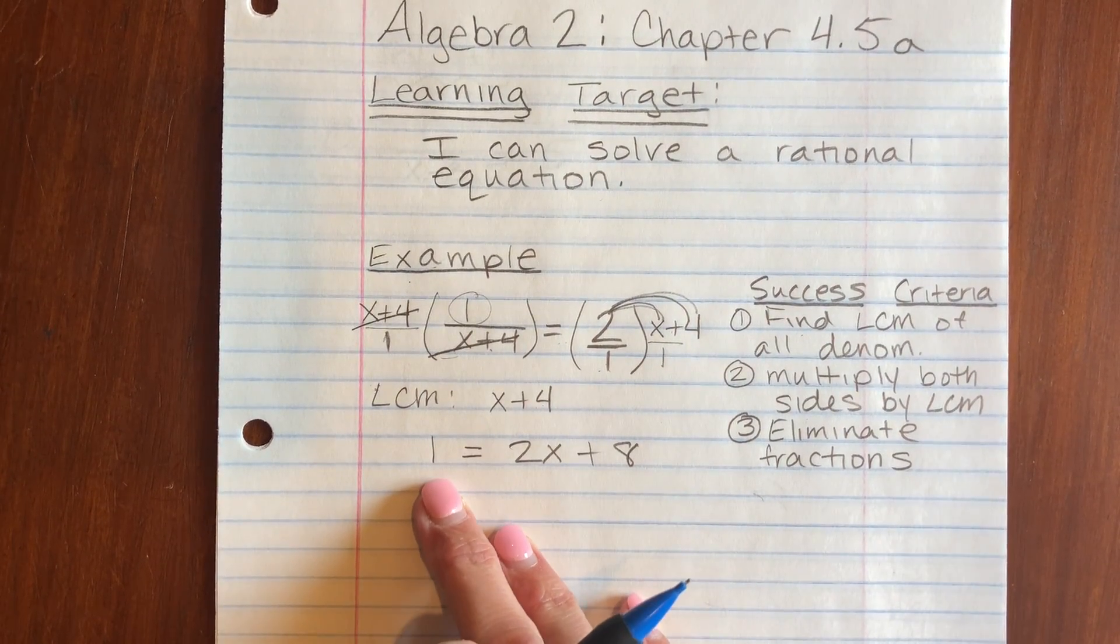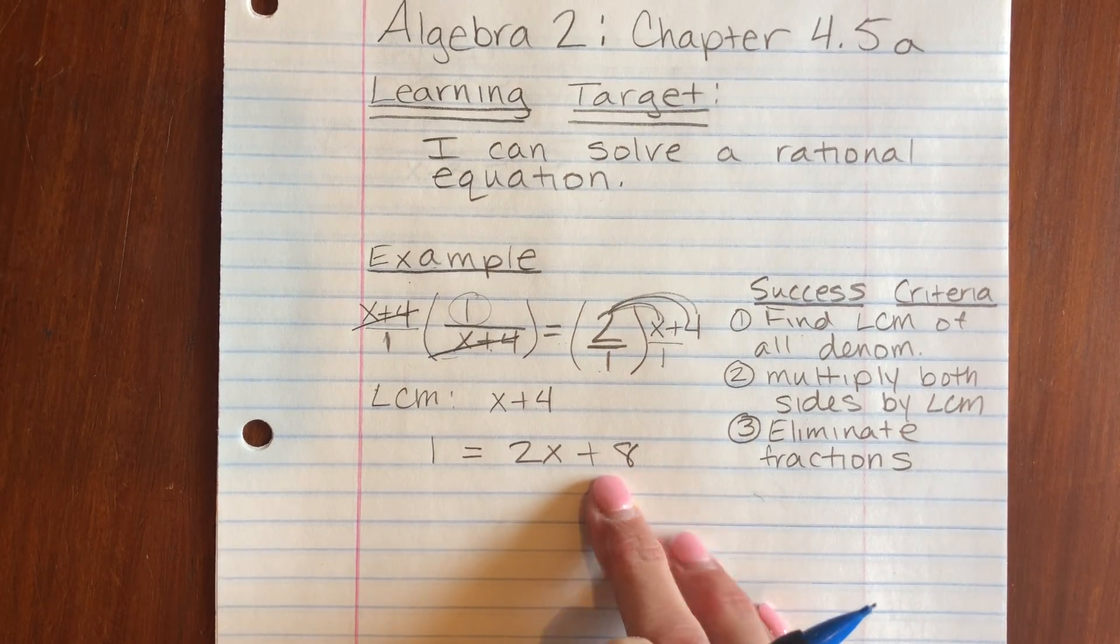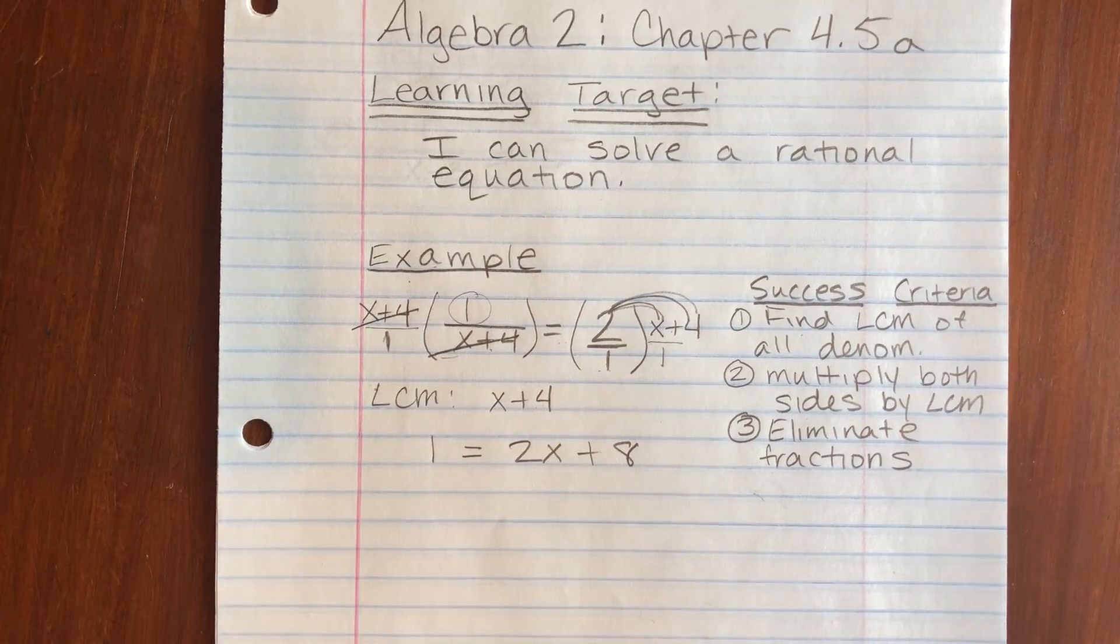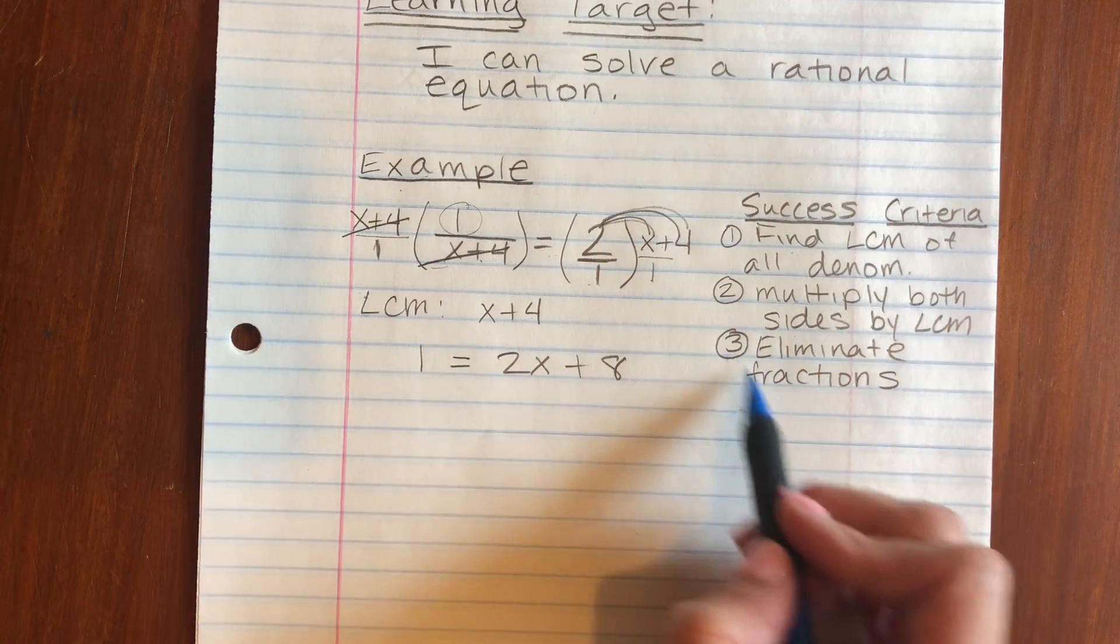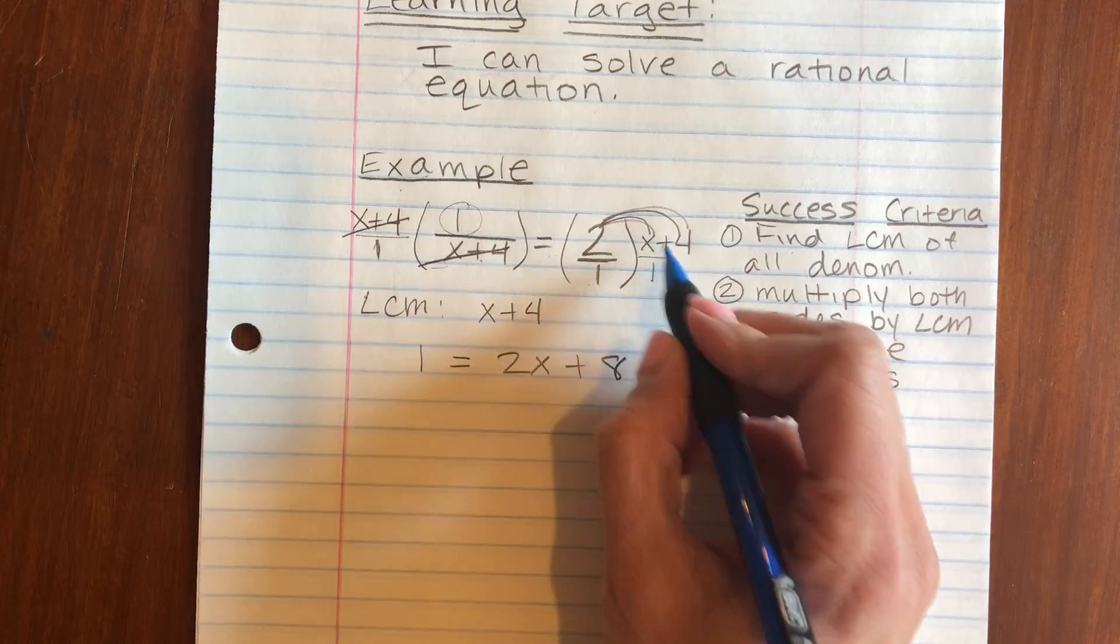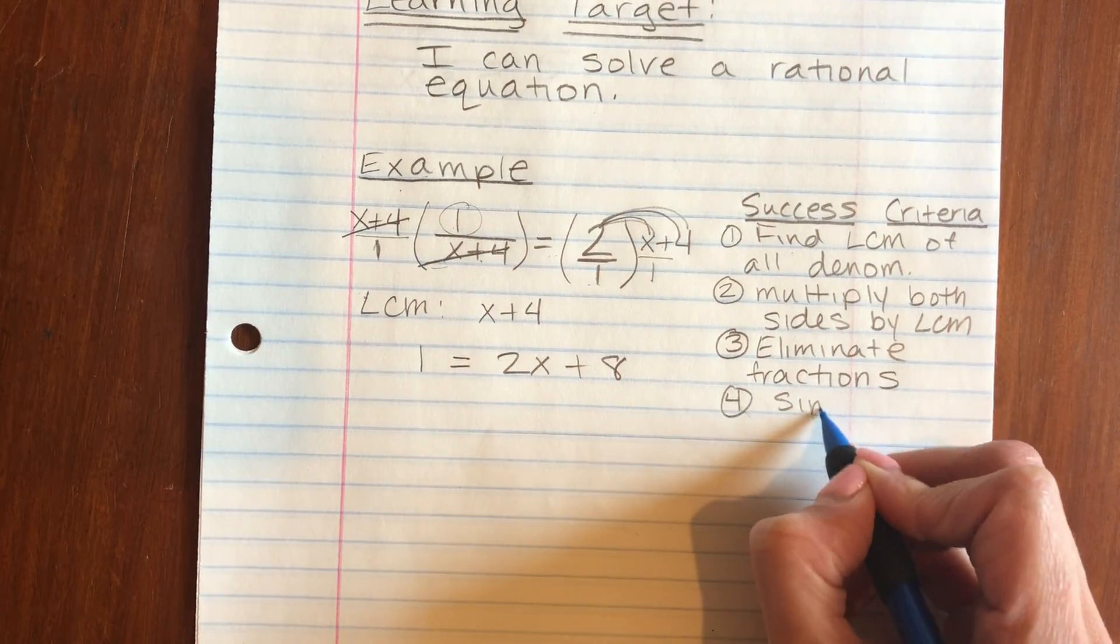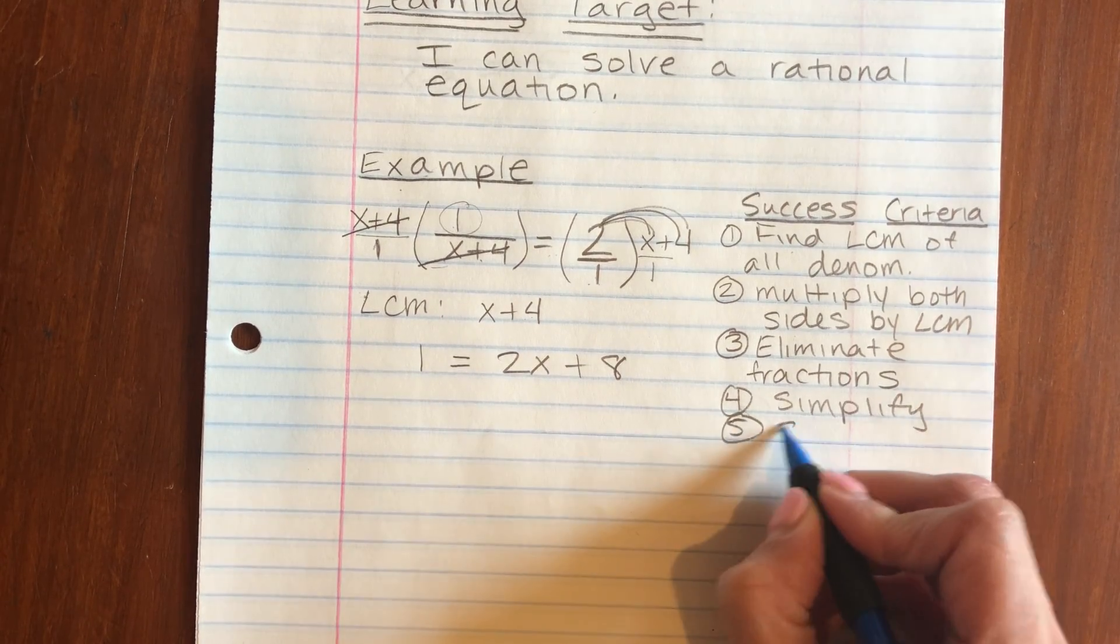So now our problem looks like 1 equals 2x plus 8. That's a lot easier to solve than what we started with. So fractions are eliminated, and then after we did that, we simplified by multiplying what's left over.